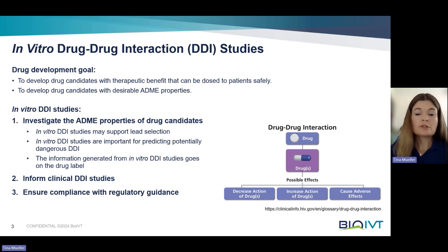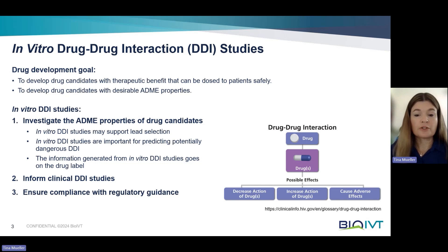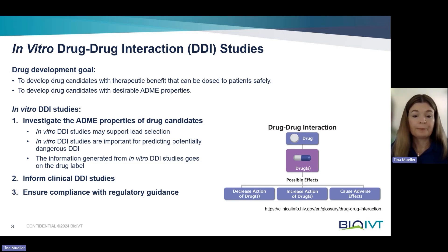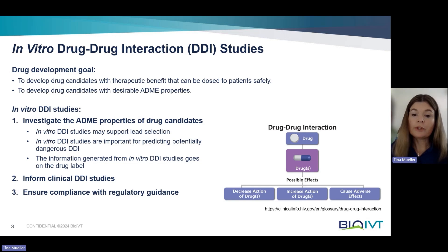Answers to these questions support the selection of a lead candidate. They also predict potentially dangerous drug-drug interactions — that is, they assess what effect a drug candidate has on other drugs that are taken at the same time. Addressing potential DDI effects is a critical aspect of drug development and safety evaluation. The relevance becomes even more important if we consider that many adults in the US take at least one prescription drug, and more than two-thirds of adults 65 years and older take more than five prescription drugs.